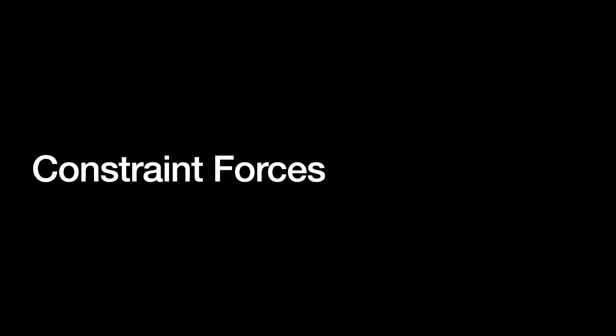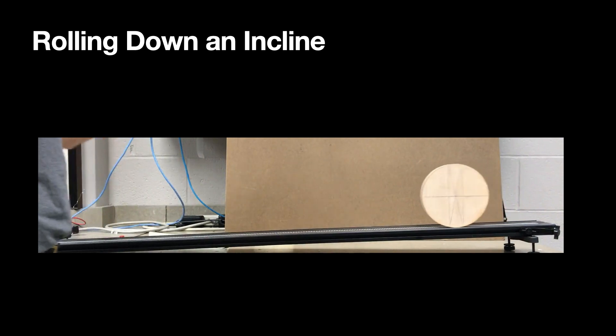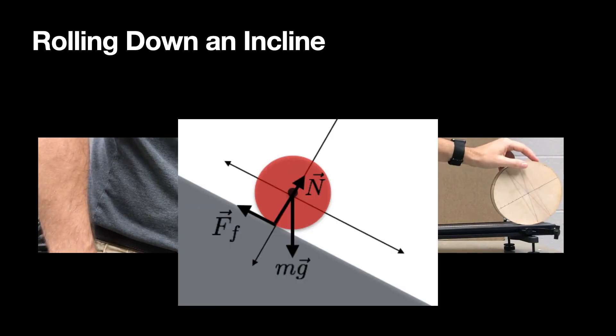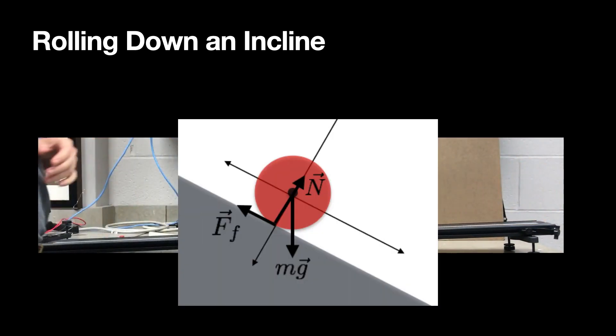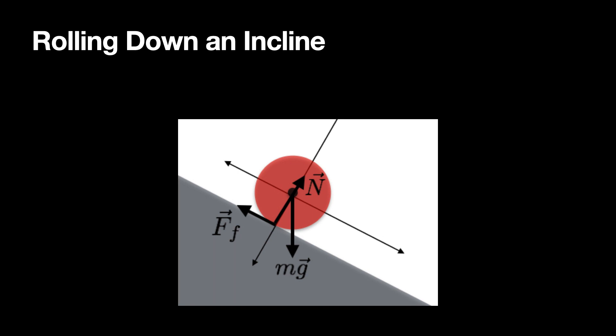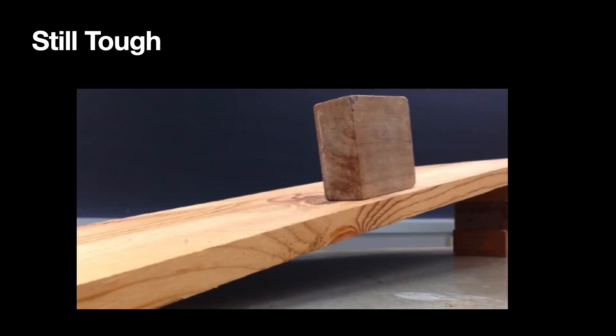Now we have constraint forces — I usually say forces of constraint. Here is an example of a cylinder rolling down an incline. The forces on it include the gravitational force, the normal force between the cylinder and the surface, and a frictional force. Here's another example: a block sitting on a plane with a normal force and friction. Let's talk about those forces with the simplest example.